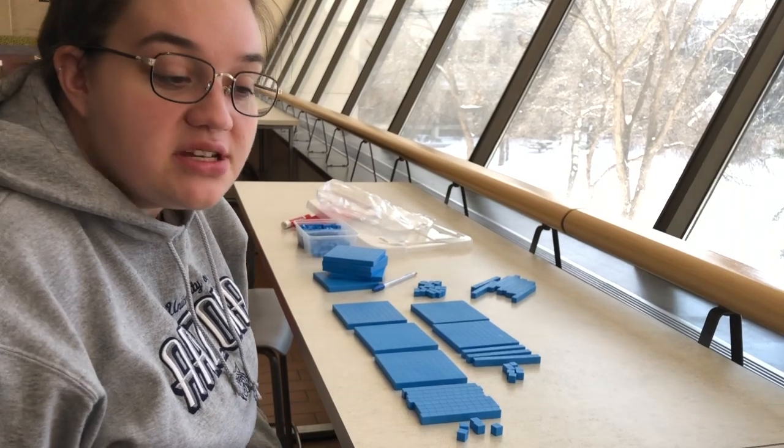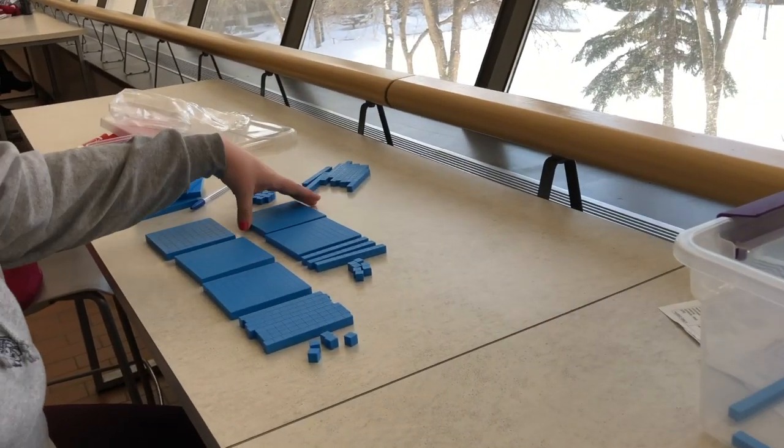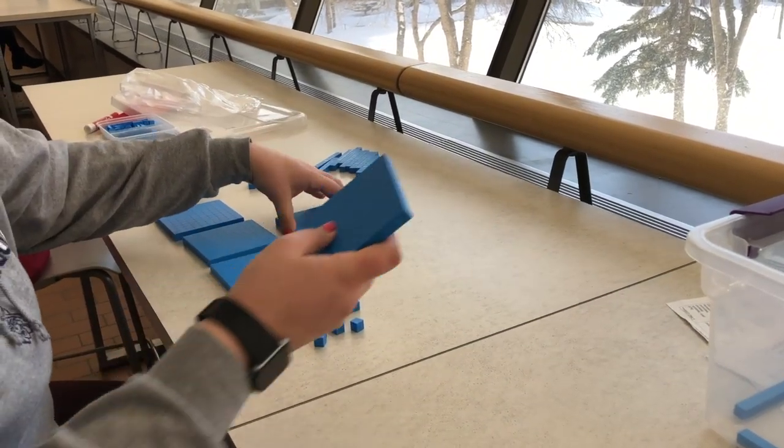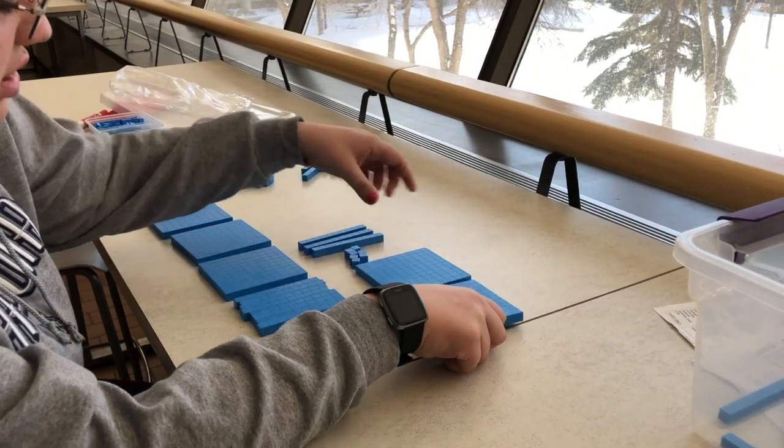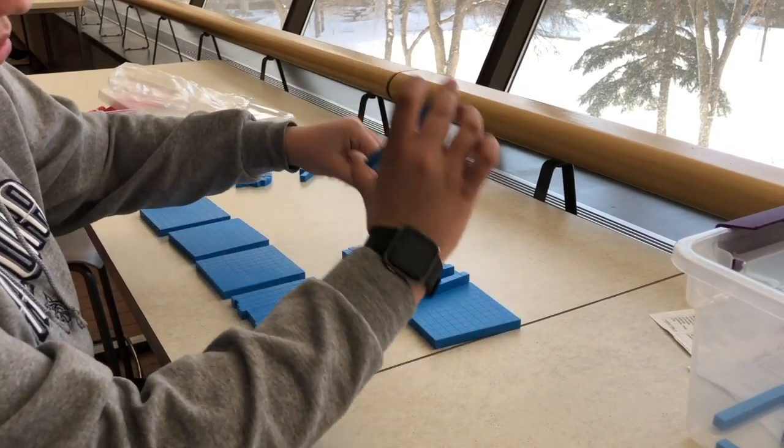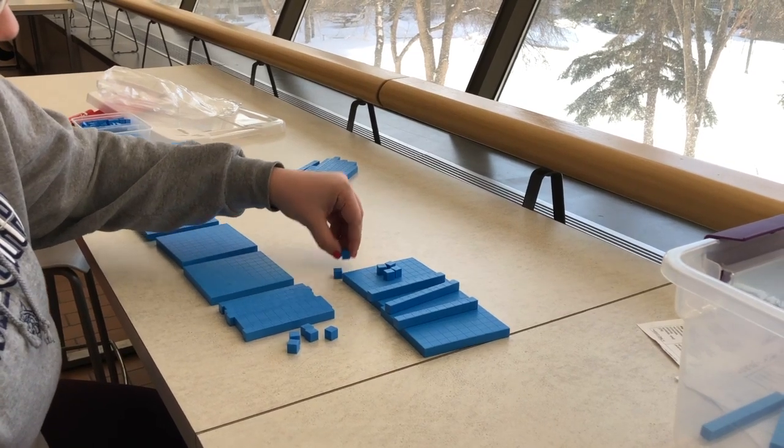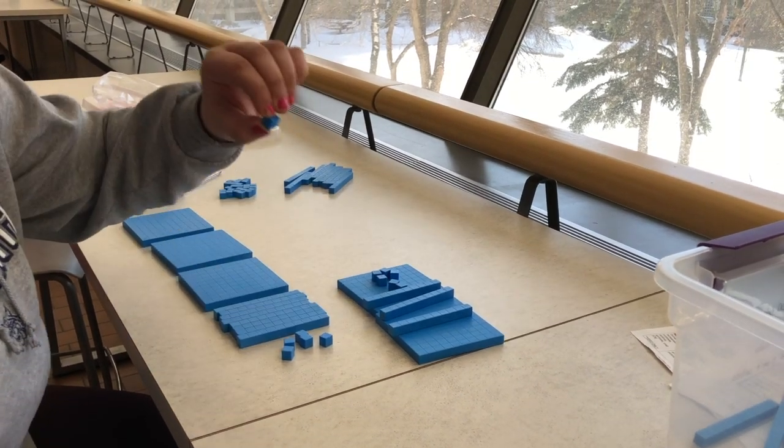So my equation is 237 plus 385. We're starting off with our 100 blocks. We've got 200, 10, 20, and 30. And then we've got 2, 4, 6, and 7 ones.